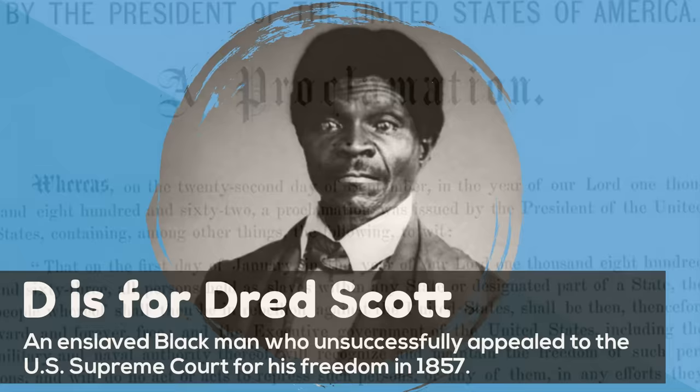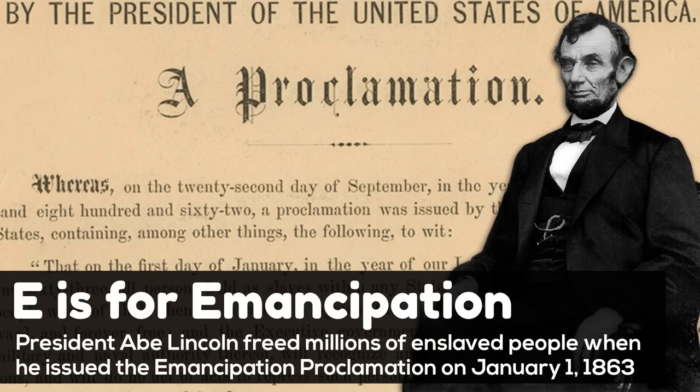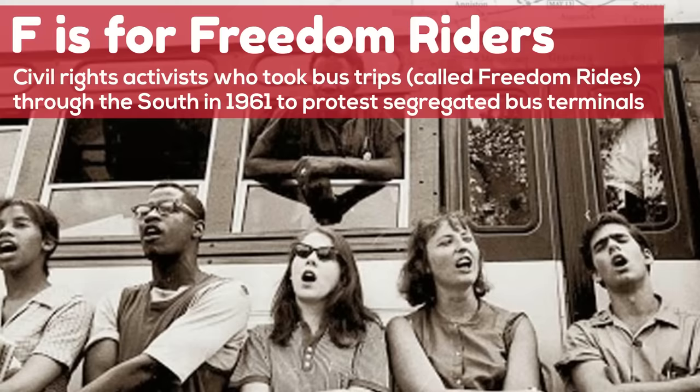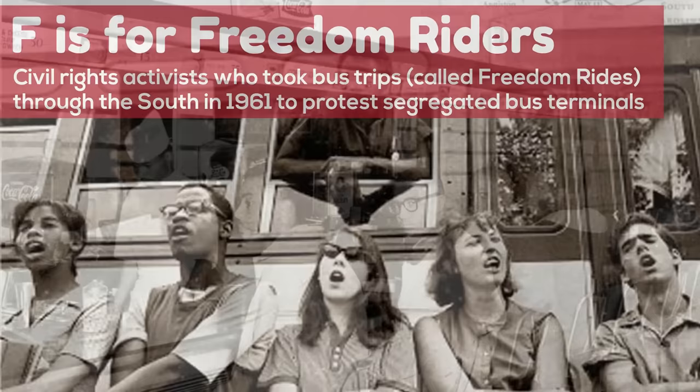E is for Emancipation. President Abe Lincoln freed millions of enslaved people when he issued the Emancipation Proclamation on January 1, 1863. F is for Freedom Riders, civil rights activists who took bus trips called Freedom Rides through the South in 1961 to protest segregated bus terminals.